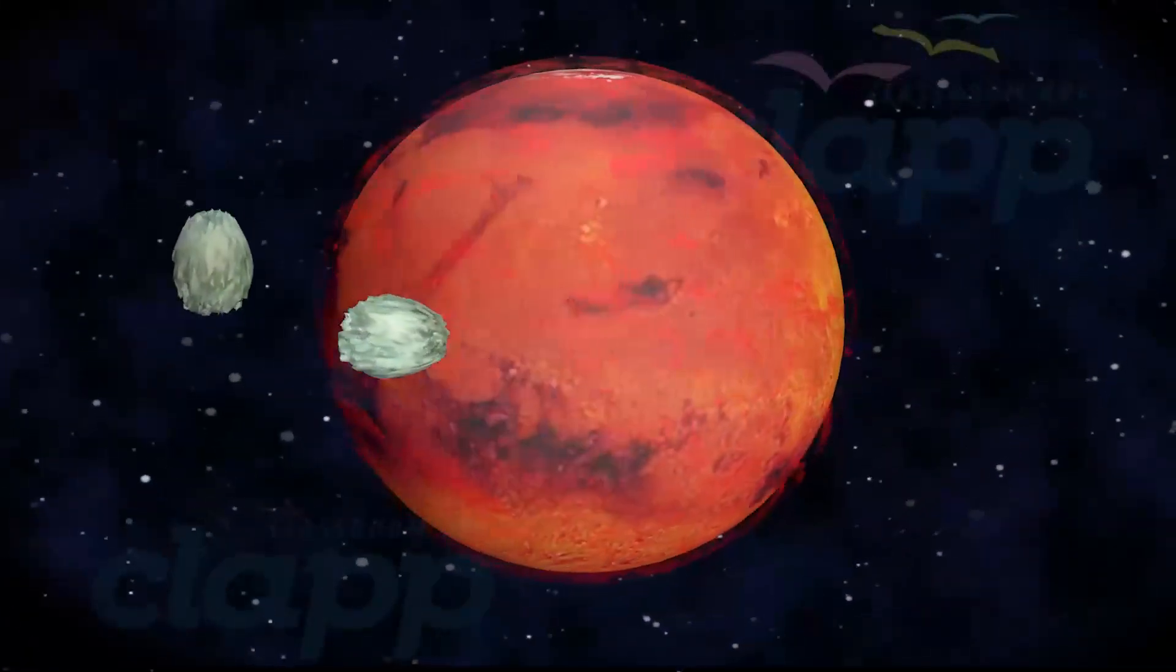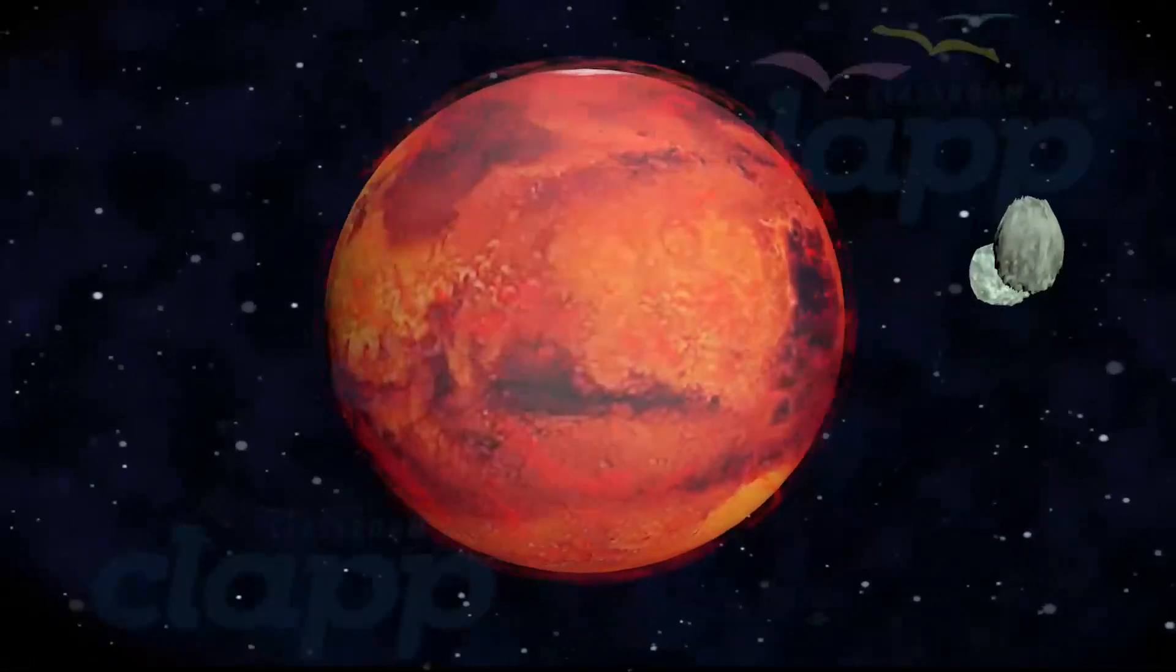Mars has two moons, Phobos and Deimos, which are small and irregularly shaped.